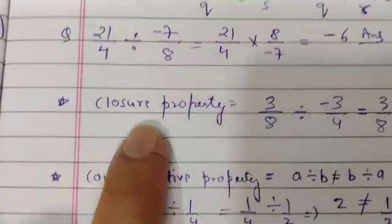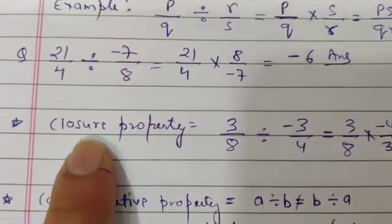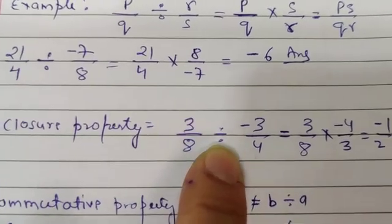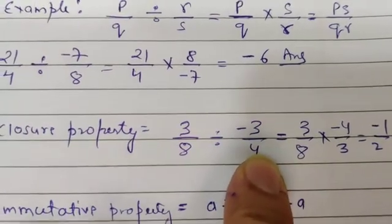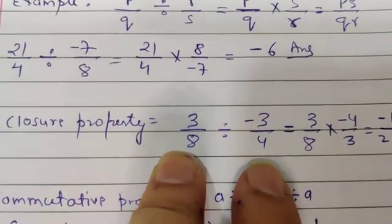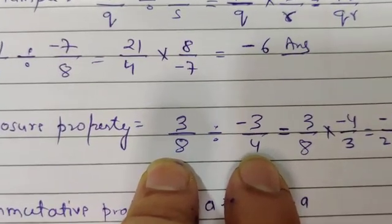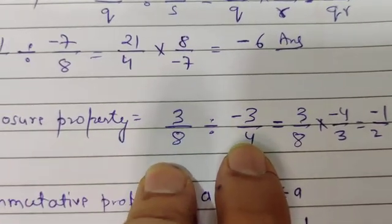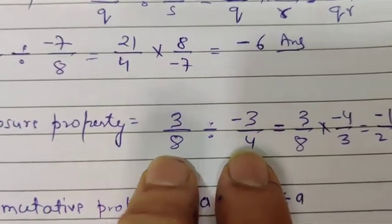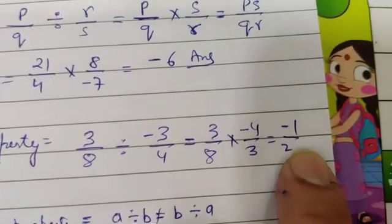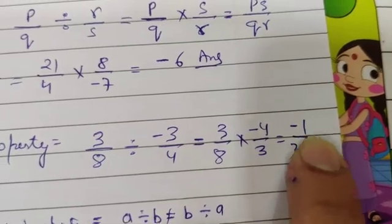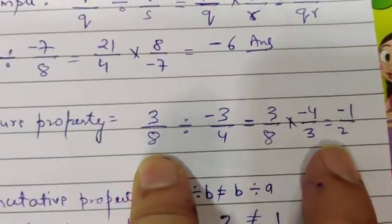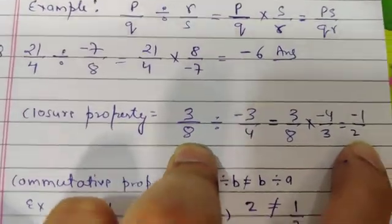Let's discuss the properties also. Closure property in division: 3 by something divided by minus 3 by 4 — जब भी हम दो rational numbers को divide करते हैं, तो उनका answer भी एक rational number के form में ही आएगा, जैसे कि यह minus 1 by 2. यानि कि closure property division में satisfy कर रही है।